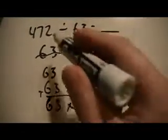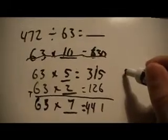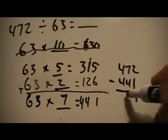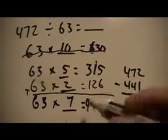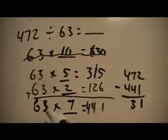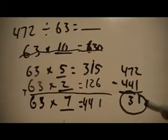And I know that's really close, so I'm just going to subtract these two numbers and see what the difference is. 472 minus 441 is 31. Now I know that this is less than what I'm dividing by, so I know that this is what's going to be called my leftover or remainder.